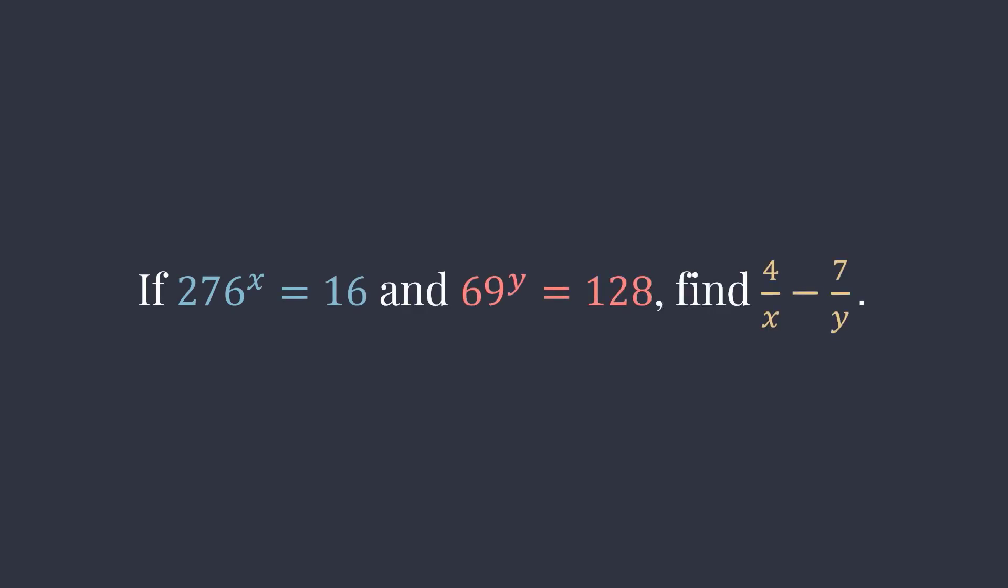If 276 to the x equals 16 and 69 to the y equals 128, what is 4 over x minus 7 over y?